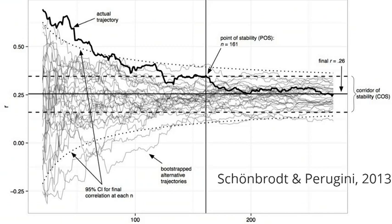Now as you enter the corridor of stability, as Schönbrodt and Perugini call this, you see that the variation becomes much less severe. There is still some variation around the true effect size estimate, but at this point you are making very accurate estimations.